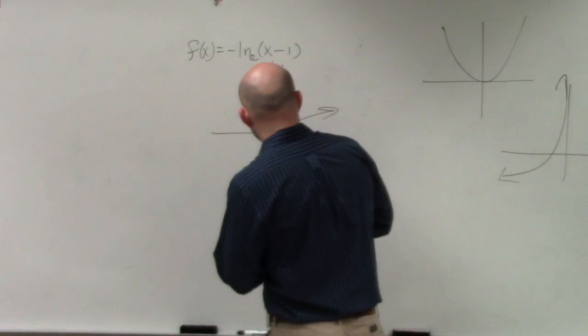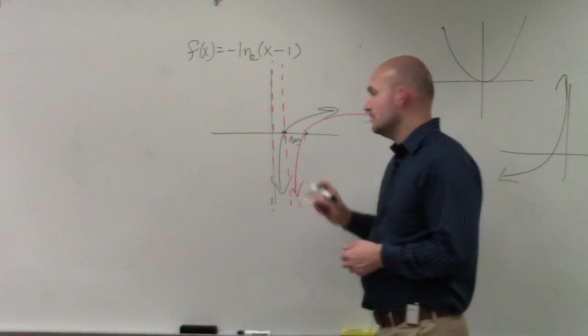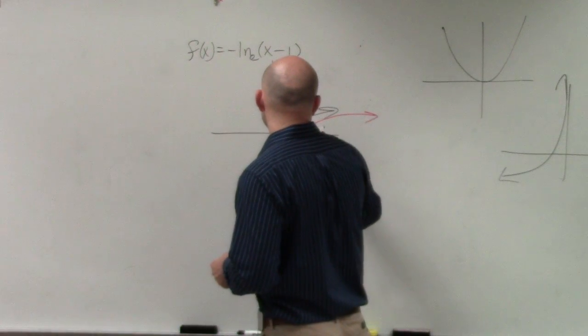So now the graph looks like this, and it now has a new x-intercept at 2 comma 0.